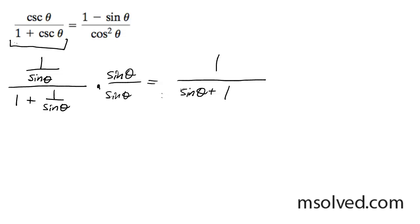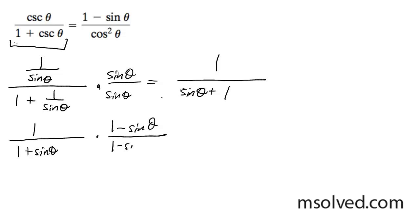Now what we're going to do next is take the conjugate, and you'll see what we're doing. So 1 over 1 plus sine theta — it's a little easier to see this way — multiplied by 1 minus sine theta over 1 minus sine theta. Now we're going to get 1 minus sine theta over 1 minus sine squared theta.